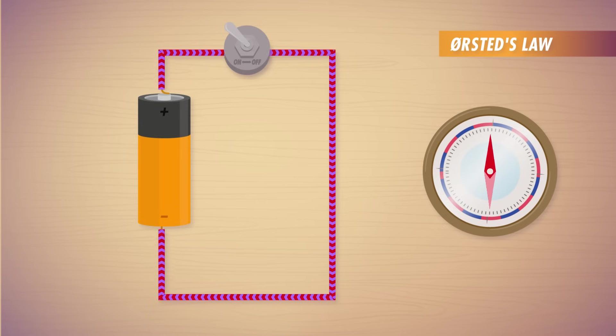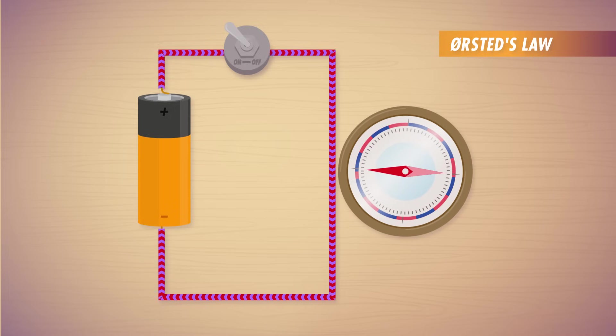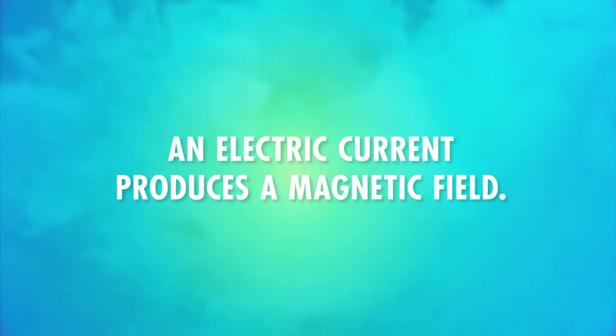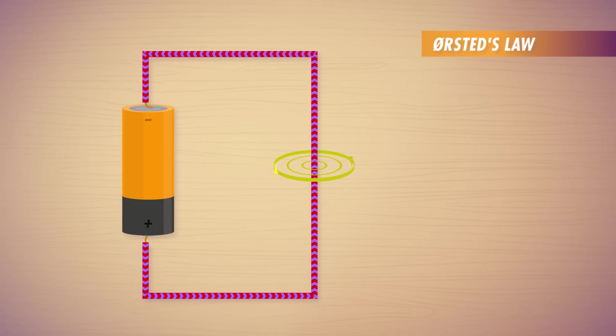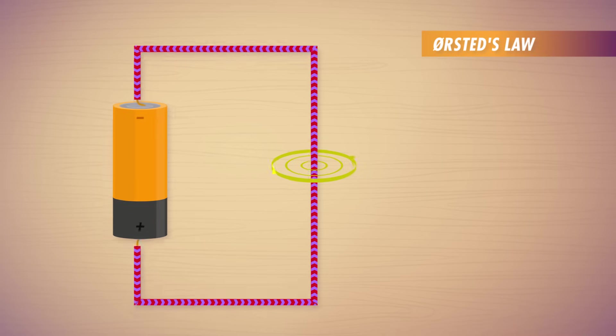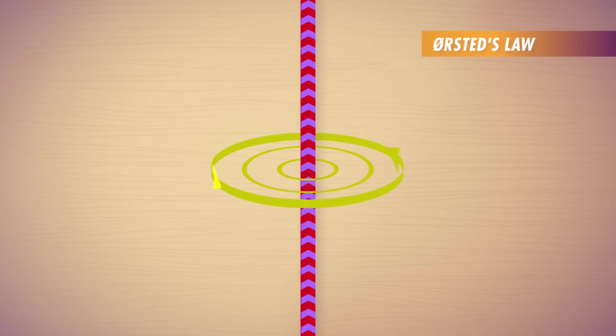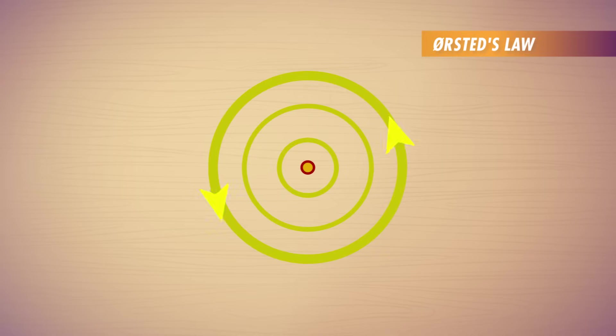When Ørsted was doing his demonstration in 1820, he was using a regular compass magnet. But when he brought the magnet closer to a wire carrying a current, the magnetic field from the current exerted a force on the needle, moving it to point in a different direction. Ørsted had discovered one of the fundamental principles of electromagnetism: an electric current produces a magnetic field. After a few more months of experimenting, Ørsted figured out that when a current runs through a wire, the magnetic field it produces surrounds the wire. Expressed with field lines, the magnetic field appears as circles with the wire at their center. If the current was coming straight toward you, the field lines would be pointing counterclockwise. We use the vector B to represent the magnetic field – its magnitude is the strength of the field, and its direction is the field's direction.